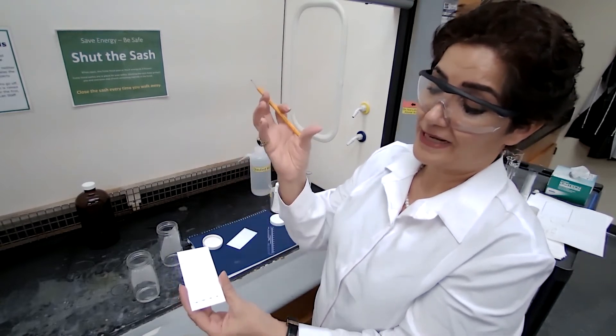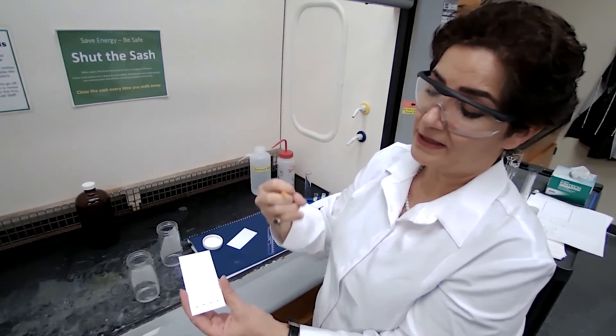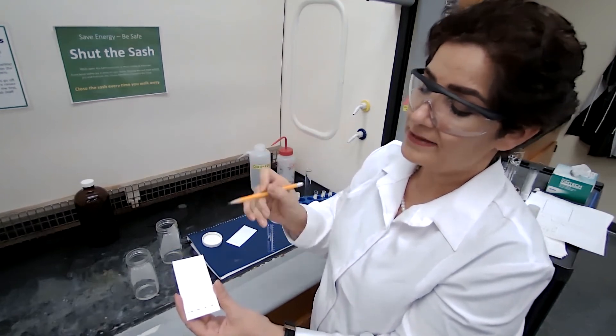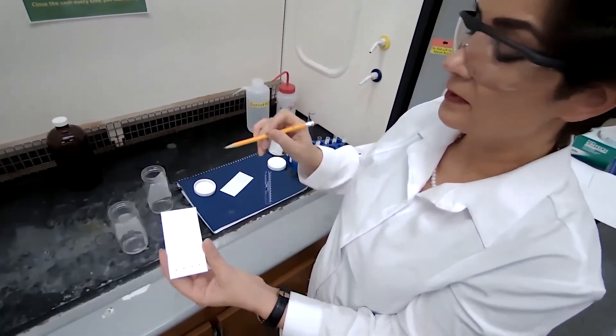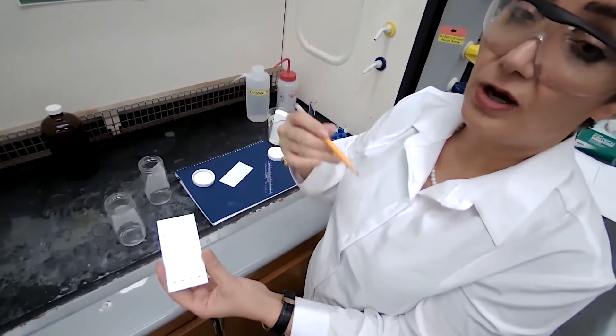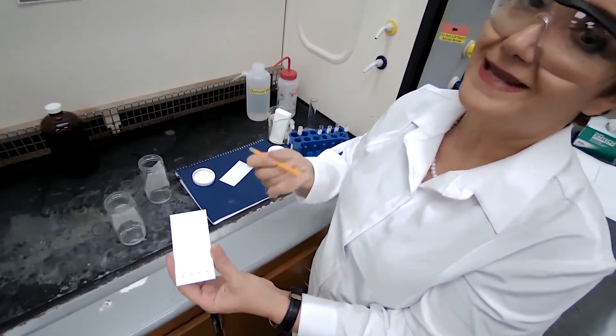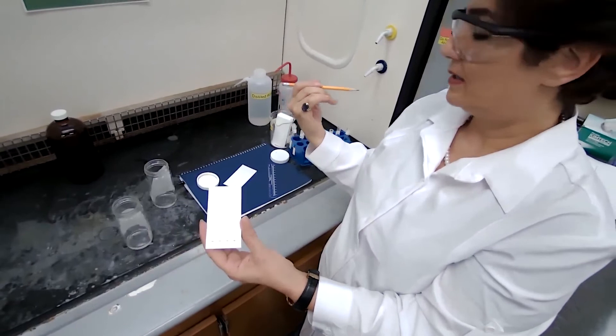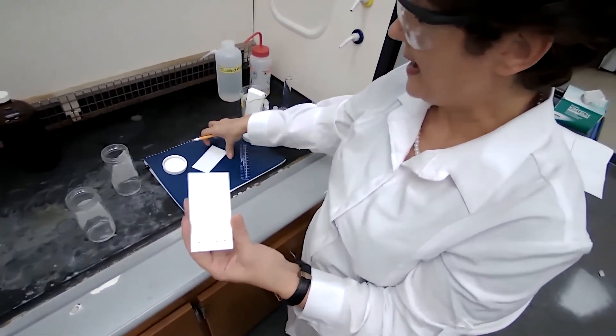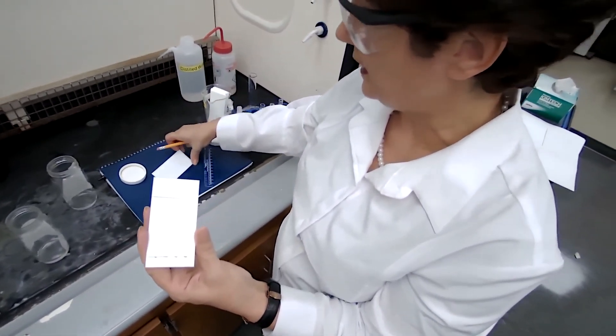Basically the powder that we have embedded here, they are fluorescent and they are shiny and they are going to show up under the UV light. And the sample is going to show as a dark spot, that's what we are going to see under the UV lamp. So let's take this to the UV lamp.